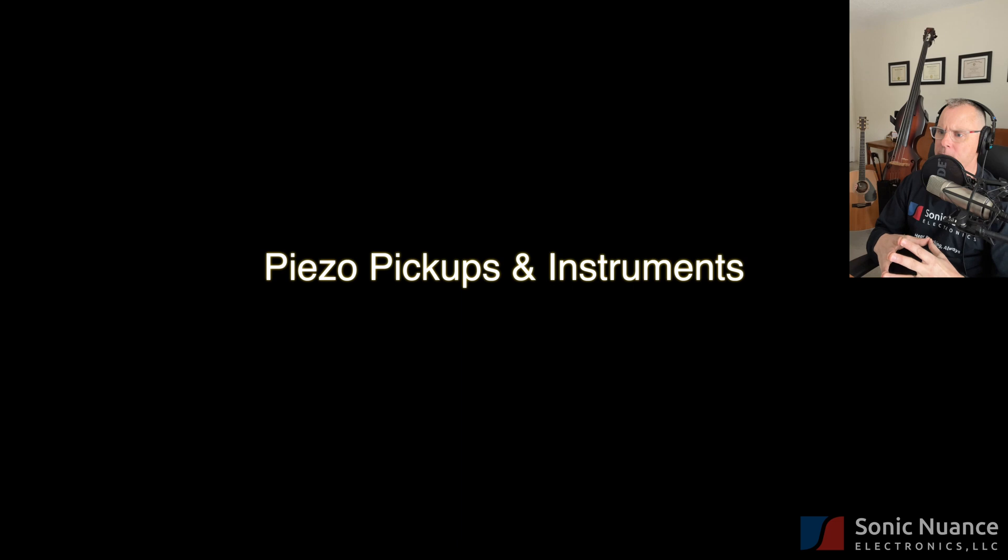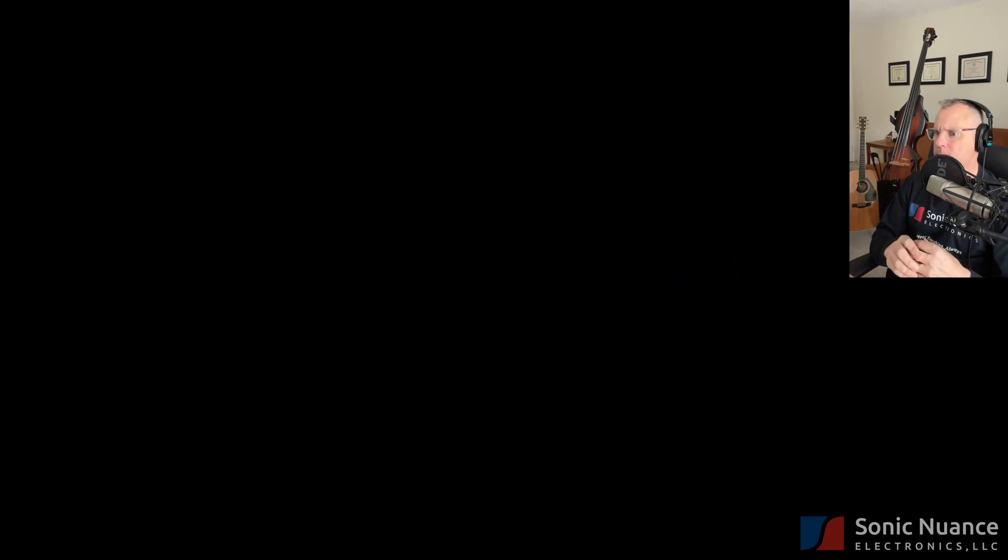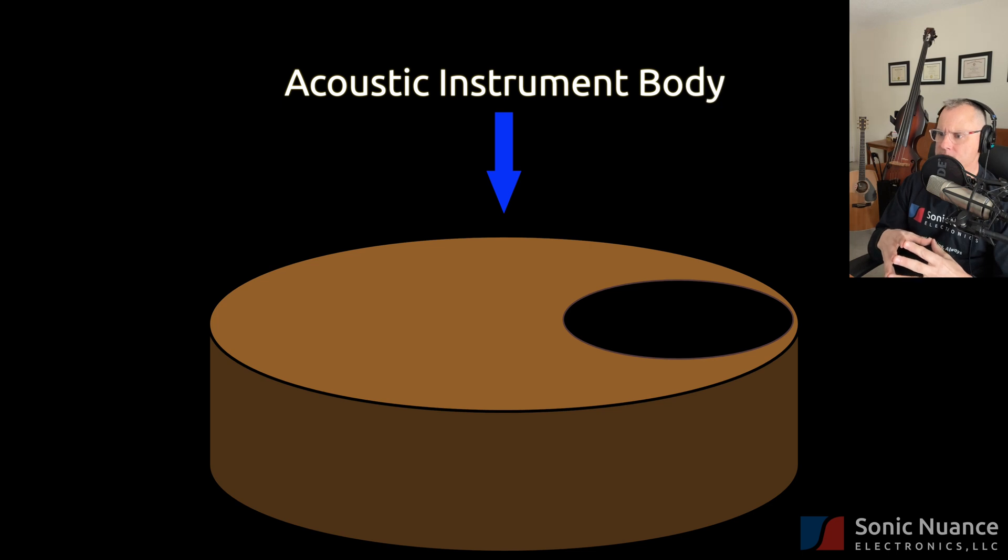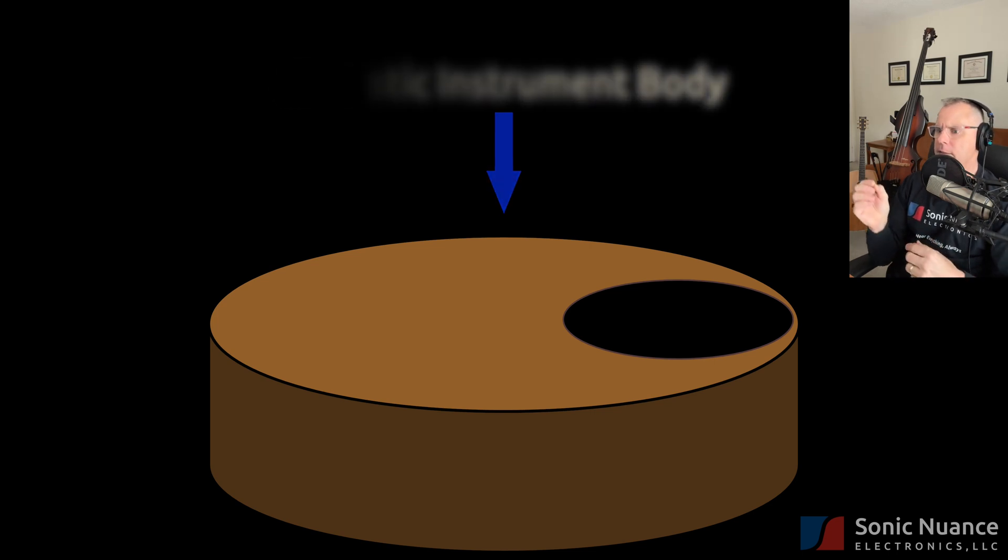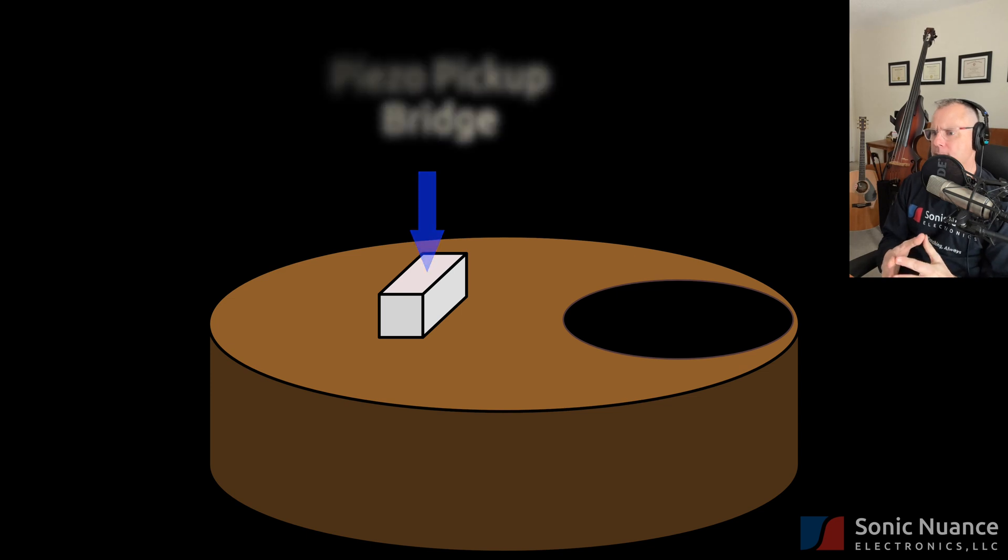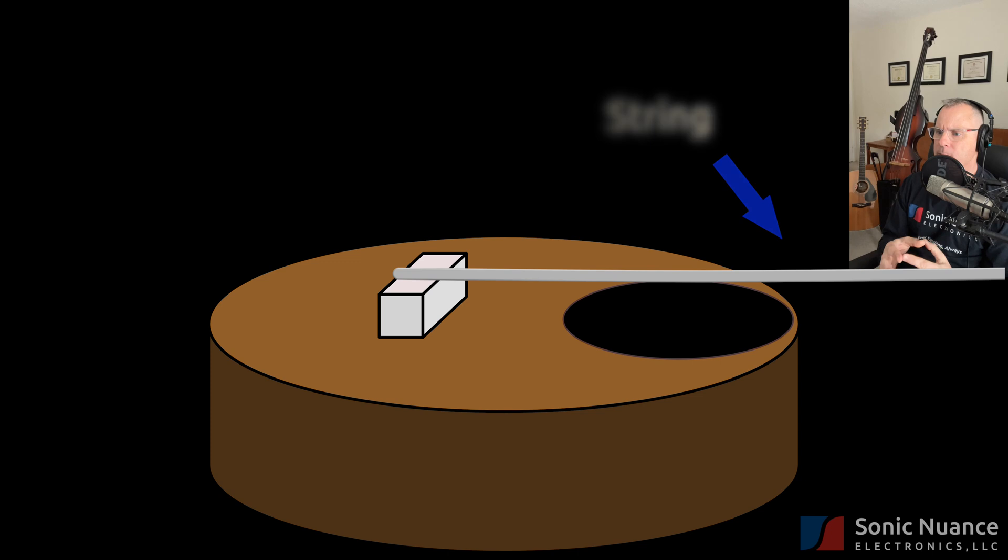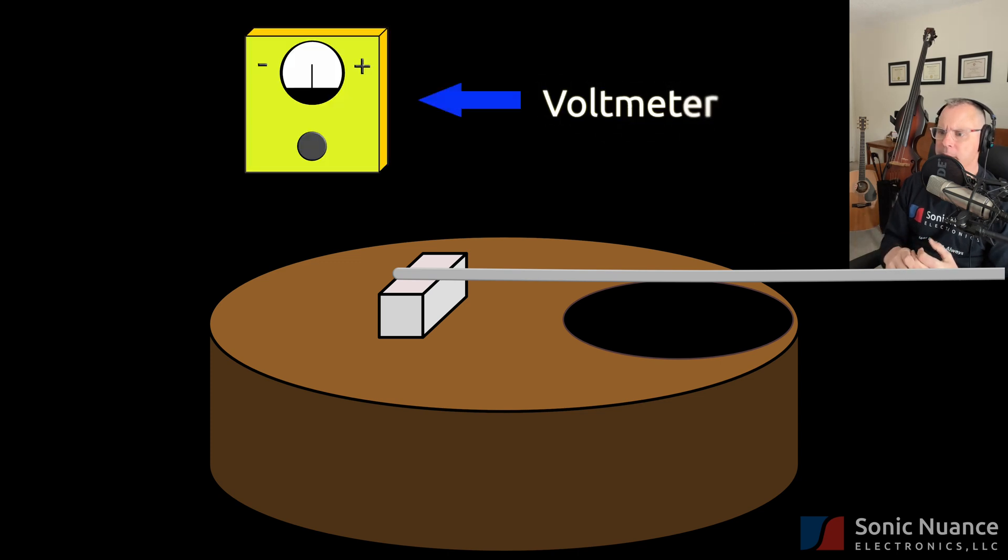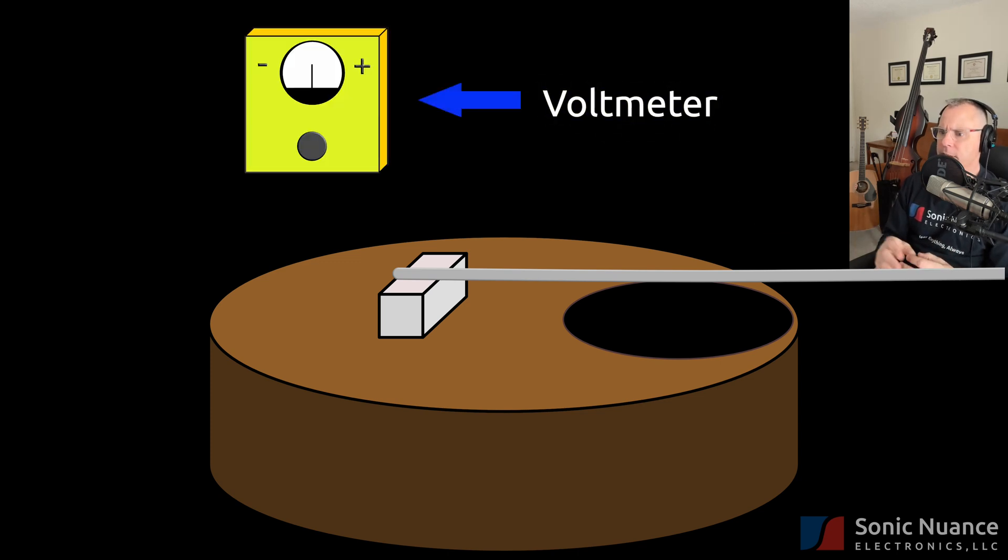Alright, let's talk now about how piezo pickups apply to instruments. Here we have an acoustic instrument body. Let's add to it a bridge with a piezo pickup. Let's add a string. We'll bring our voltmeter back, as well as a cable from the instrument's pickup to the voltmeter.